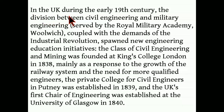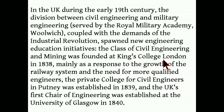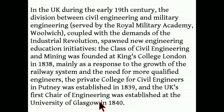In the UK during the early 19th century, the division between civil engineering and military engineering served by the Royal Military Academy, Woolwich, coupled with the demands of the Industrial Revolution, founded new engineering education initiatives. The class of civil engineering and mining was founded at King's College London in 1838, mainly as a response to the growth of the railway system. The private college for civil engineers in Putney was established in 1839, and the United Kingdom's first chair of engineering was established at the University of Glasgow in 1840.